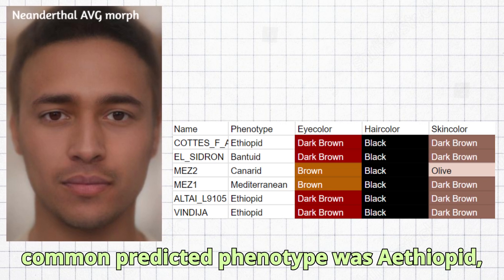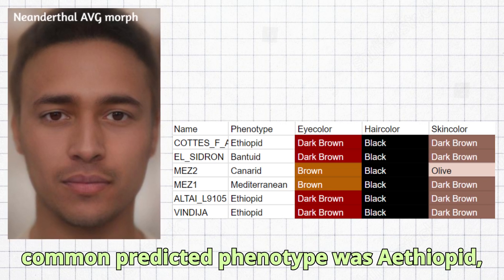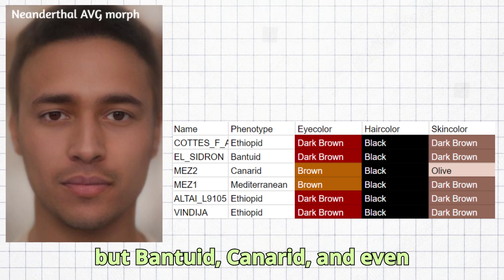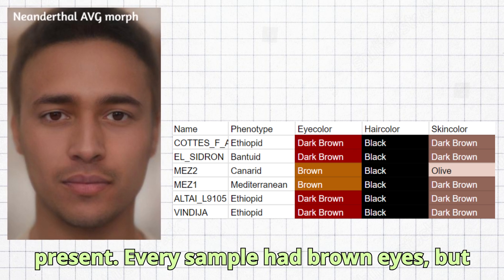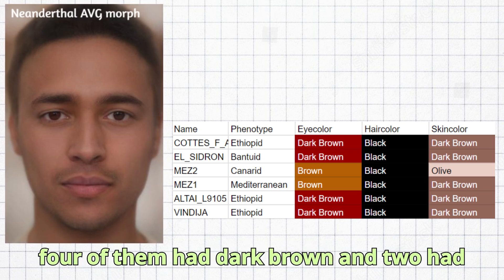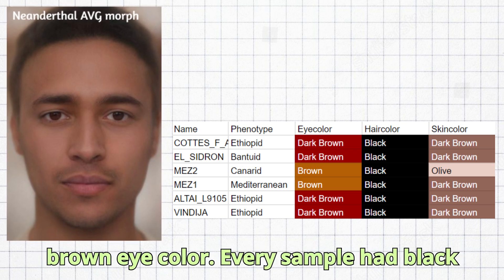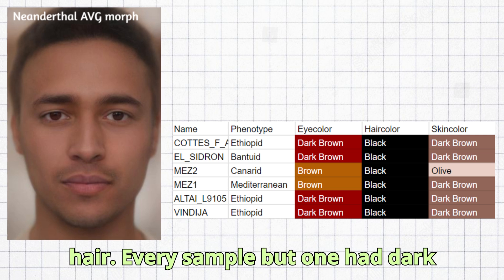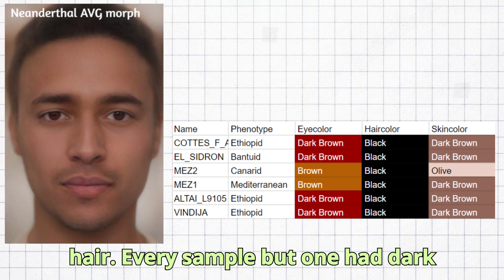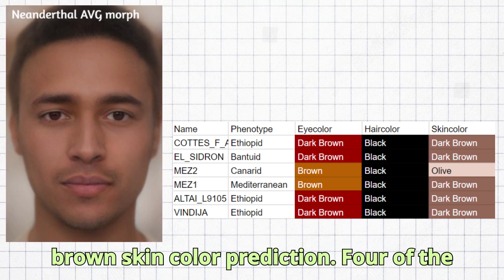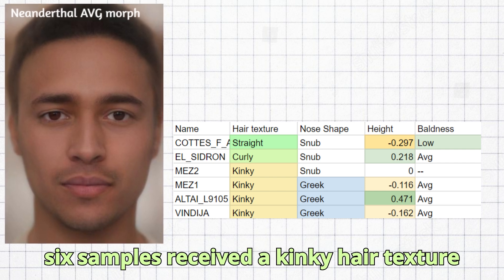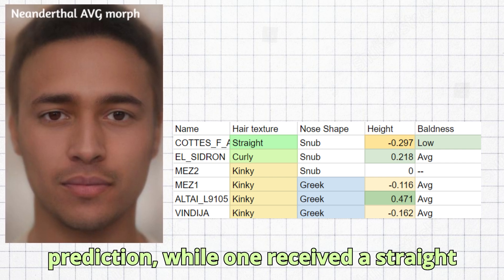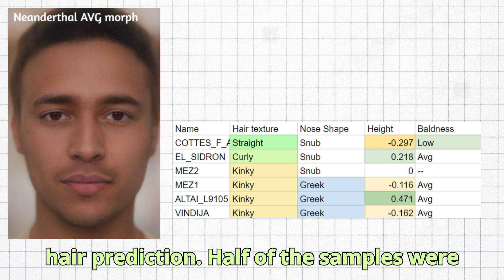The most common predicted phenotype was Ethiopid, but Banshuid, Canarid, and even Mediterranean phenotypes were also present. Every sample had brown eyes — four had dark brown and two had brown eye color. Every sample had black hair. Every sample but one had a dark brown skin color prediction. Four of the six samples received a kinky hair texture prediction, while one received a straight hair prediction.